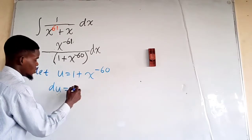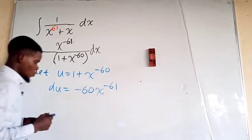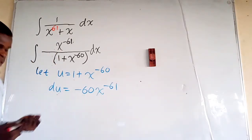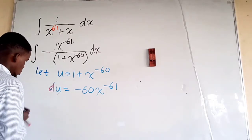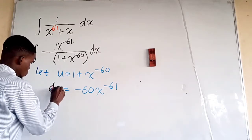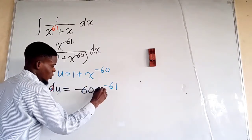This means that du—we differentiate 1 and we just have 0—this is negative 60x raised to the power of negative 61. So the du is negative 60 of x raised to the power of negative 61.